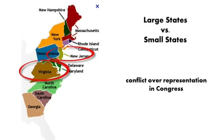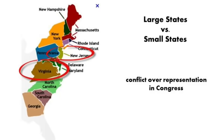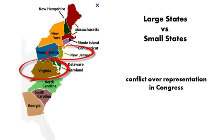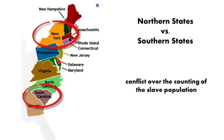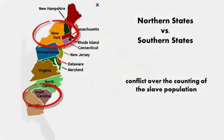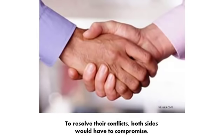This proved difficult when a conflict broke out between the large states and small states over how each state would be represented in a new Congress. Large states like Virginia wanted it one way, while small states like New Jersey wanted it another. Another conflict broke out between the northern states and the southern states, centered around the counting of the slave population — it had nothing to do with the slaves themselves, just over how much power each state would have in Congress. In order for large and small states and northern and southern states to resolve their conflicts, they would have to compromise.